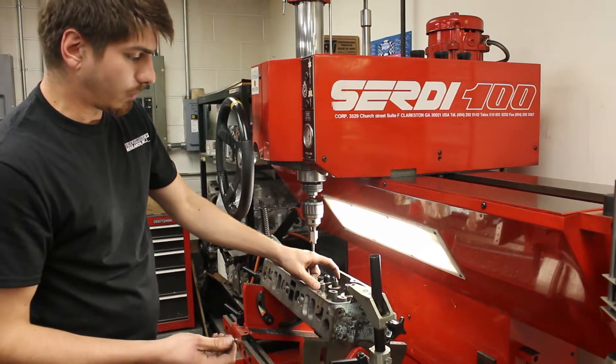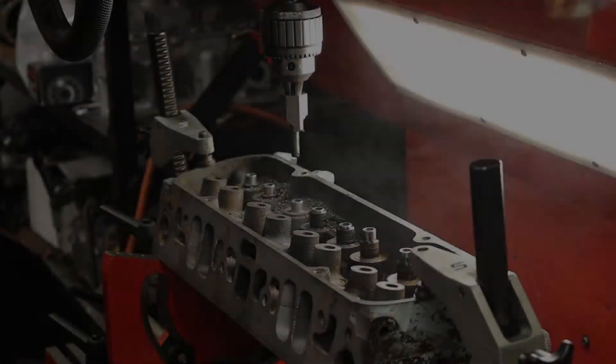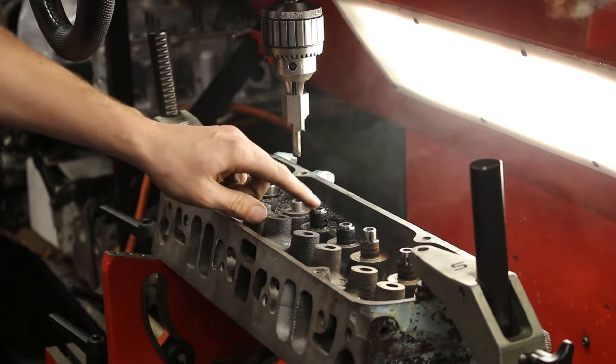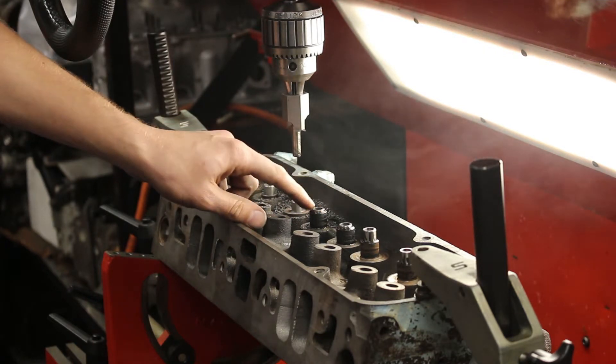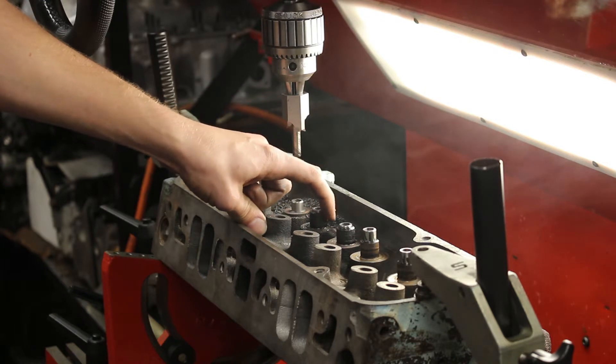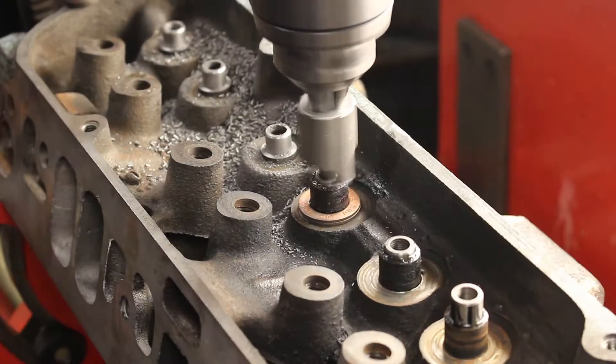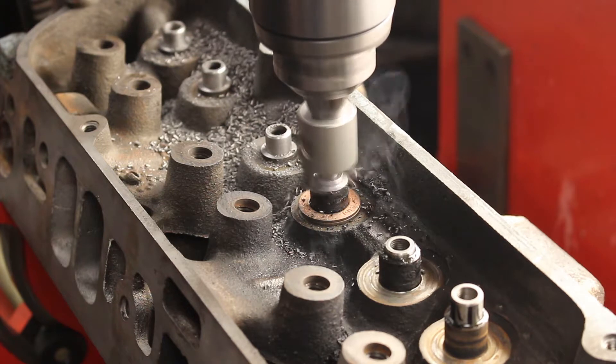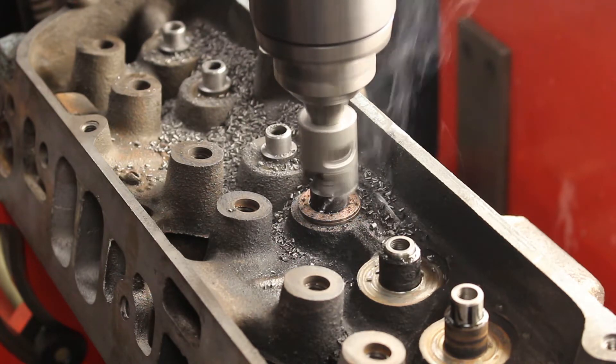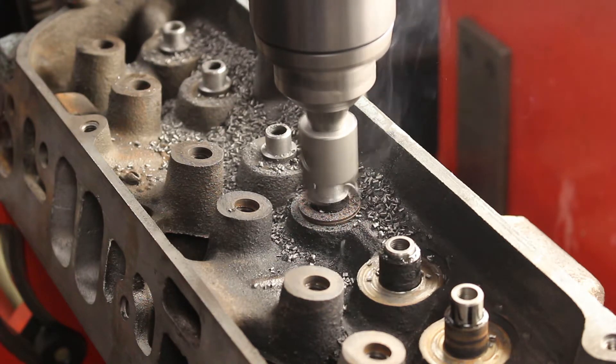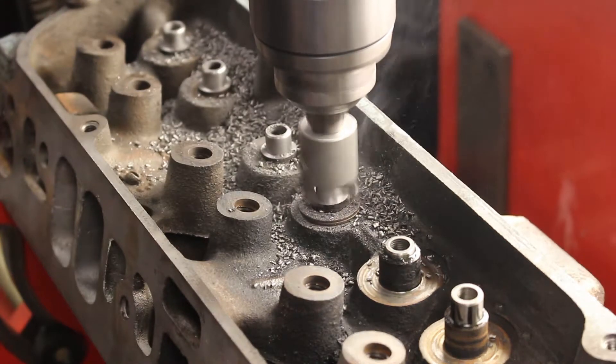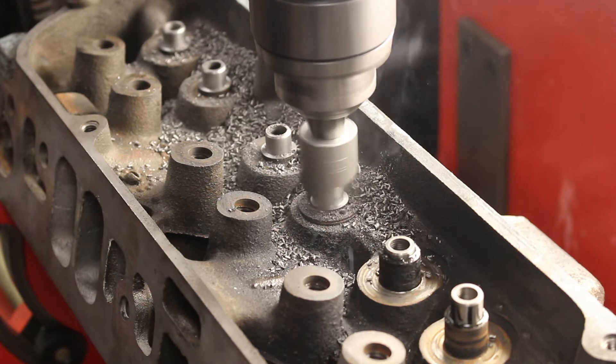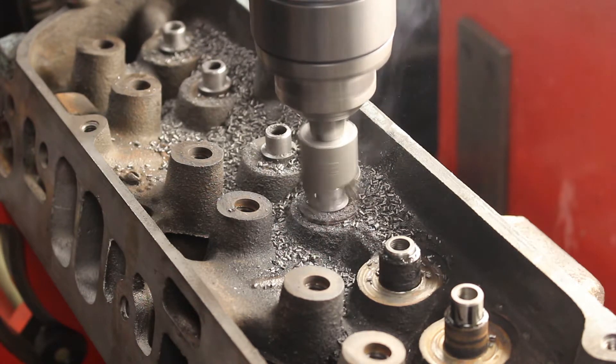And we're cutting the guide down to accept a viton seal. This tool's making two cuts simultaneously. One on the OD of the guide, and then another one at the top of the guide. So, we're actually trimming down the guide, and cutting the OD of it, to five hundred thousandths, simultaneously.